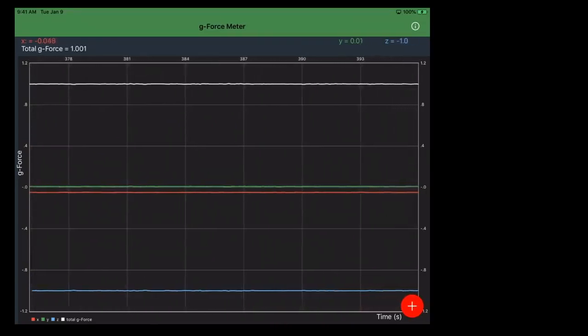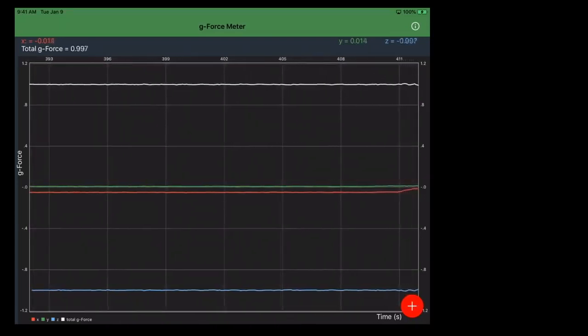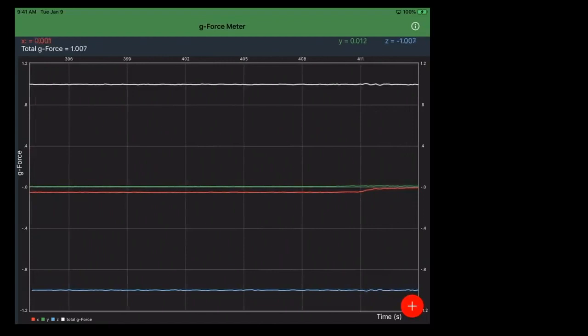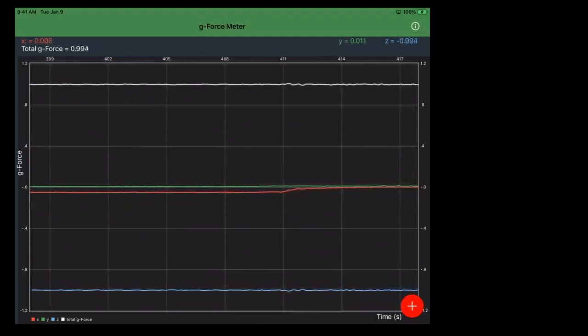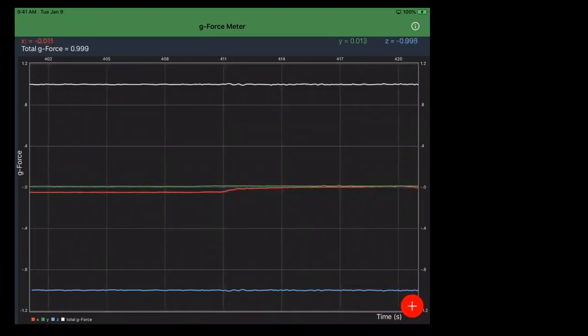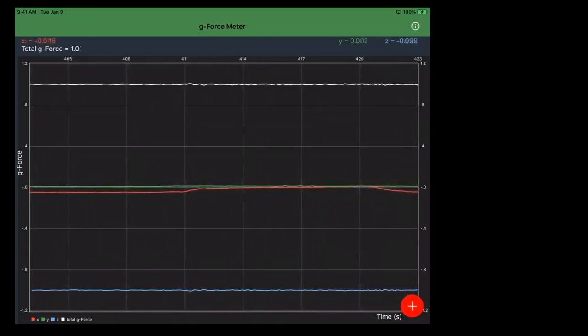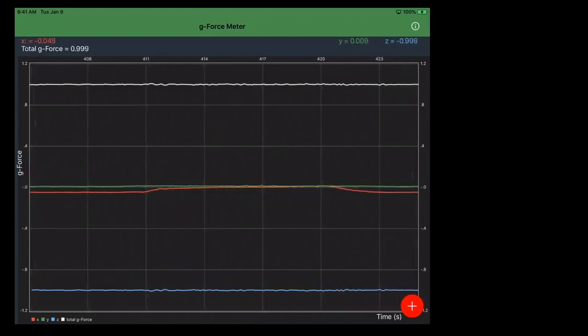Now, you notice up here that the green line, which is the y-axis, is reading zero. But the red line actually has a little acceleration due to gravity on it. What do you think that would be? It's because the iPad is slightly tilted due to the case. So if I bring it a little bit more level, you see how the red line goes straight back up to zero? And then if I bring it down, even though it's only about a tenth of an inch, you can see that that makes a difference.